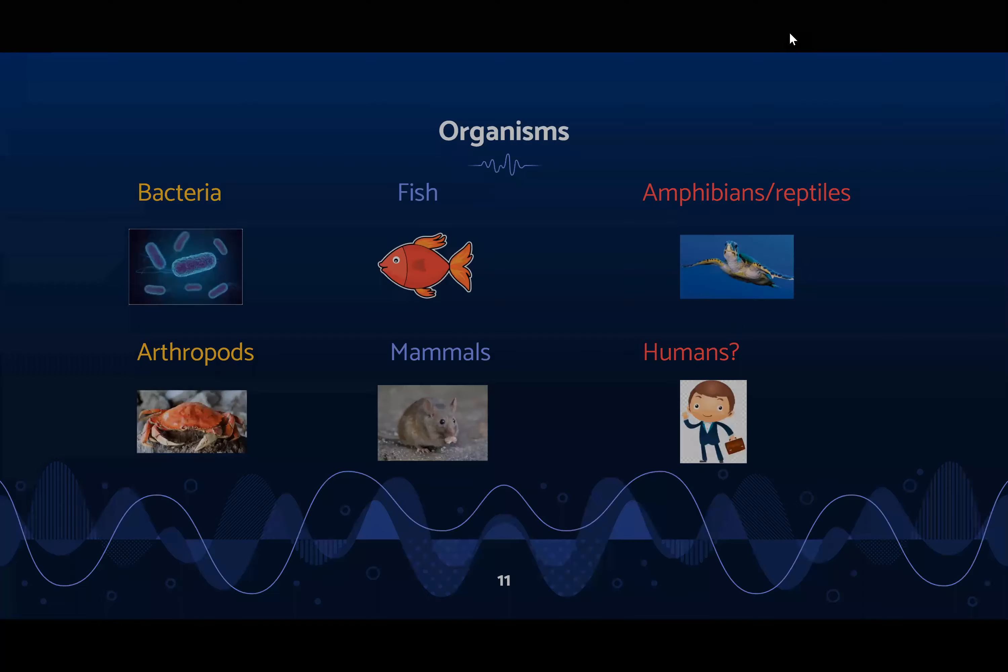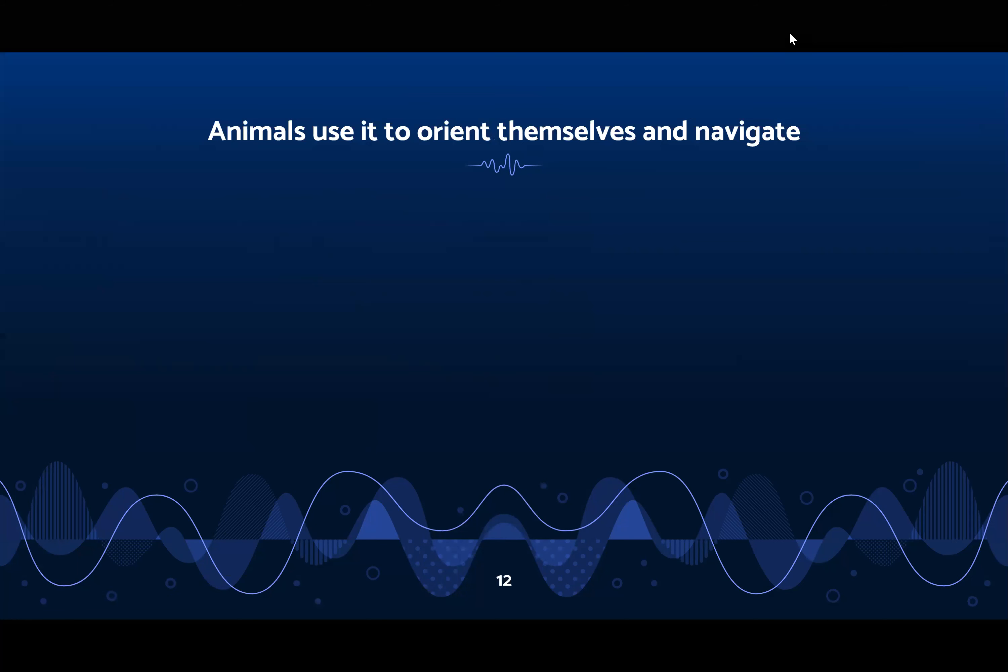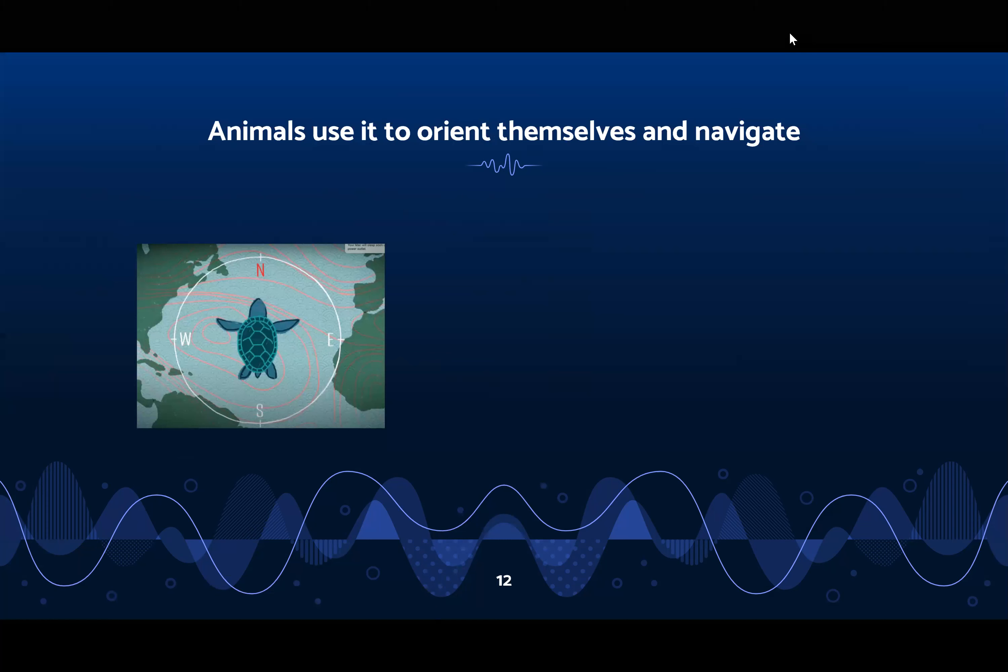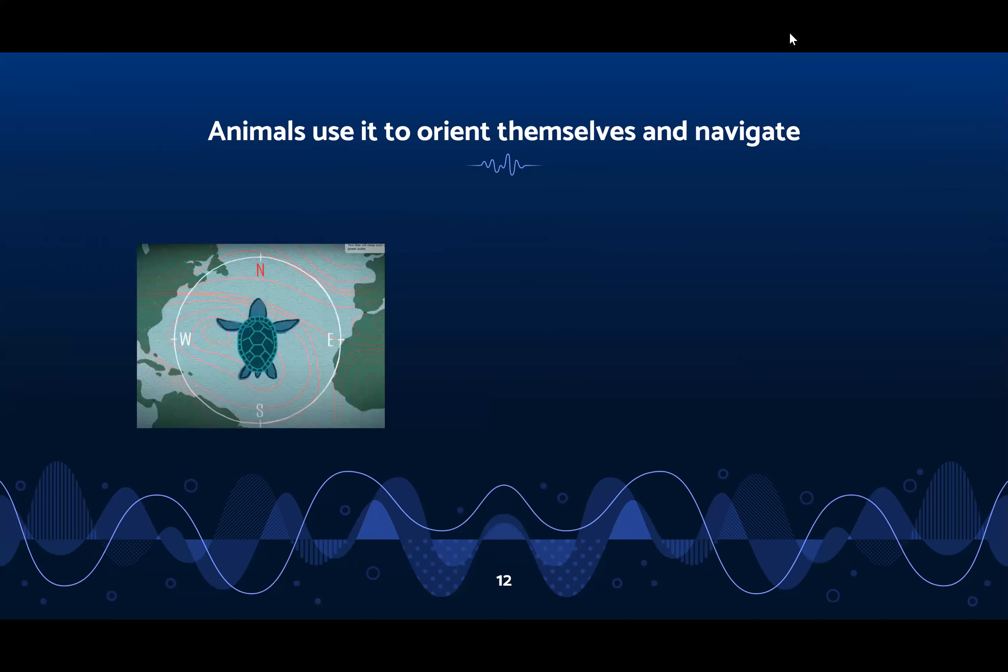Animals can use magnetoception to orient themselves and navigate using the earth's magnetic field. For example, just imagine you are a hatchling sea turtle who just hatched from an egg and you make your way to the ocean. At first you're fine because the waves pull you in. However, after a while when you're in the middle of the vast ocean, it is difficult to know which way is which. This is where magnetoception comes in handy.